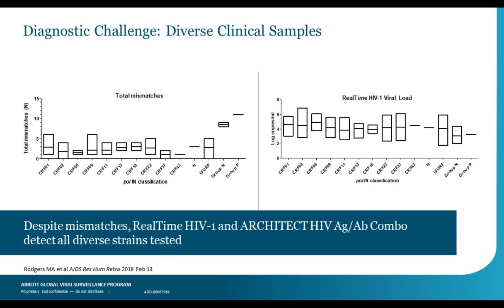Looking at how diversity affects diagnostic tests: Mary Rogers published in 2018 the impact of significant mismatches on the Abbott real-time viral load assay, showing it was incredibly robust. Even for group P, group N, and various circulating recombinant forms with up to five or six mismatches to primers and probes, the assay gives accurate and robust results. The Architect assay also accurately detects all these extremely diverse samples, validating the importance and utility of this surveillance program.